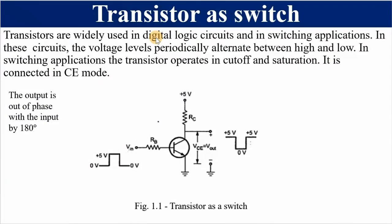A transistor can be used as a switch, and we know that a switch is used to turn on or turn off circuits. Transistors are widely used in digital logic circuits — we will be covering digital electronics later — and also in switching applications. The voltage levels alternate between high and low when we turn on a switch.